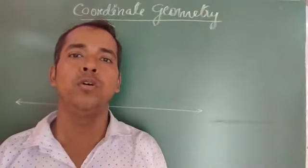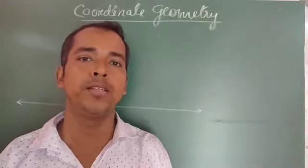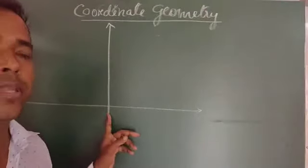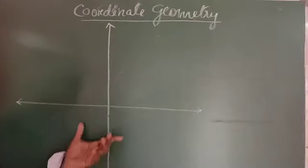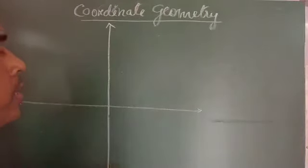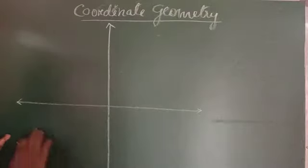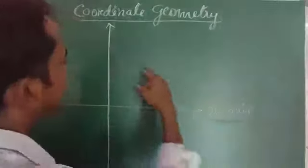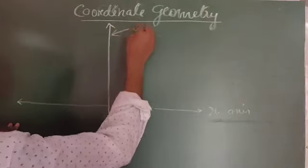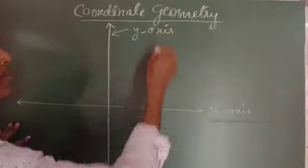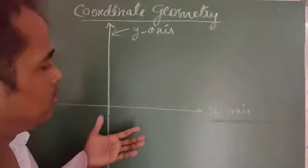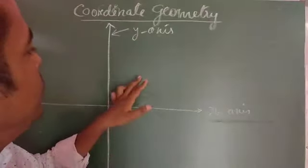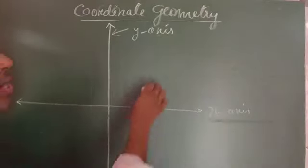Today we will learn to plot a point in a Cartesian plane. In the Cartesian plane, two number lines intersect each other perpendicularly — one is horizontal and another is vertical. The horizontal line is called the x-axis and the vertical line is called the y-axis. The two axes divide the plane into four parts, and each part is called a quadrant.